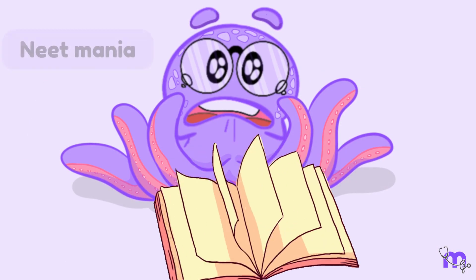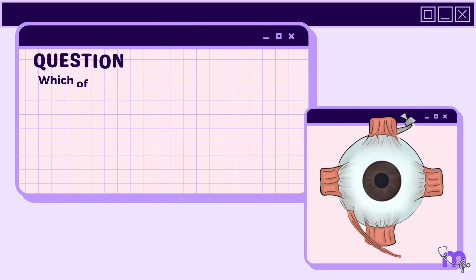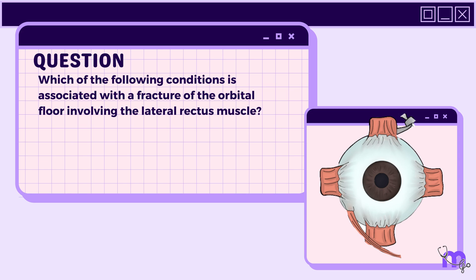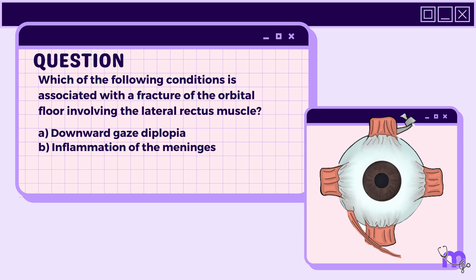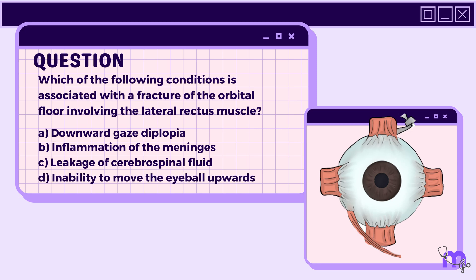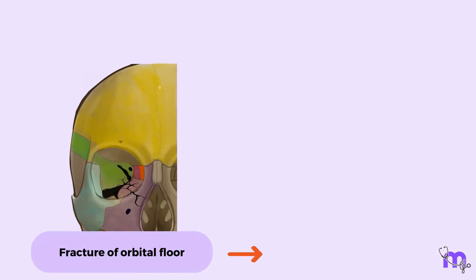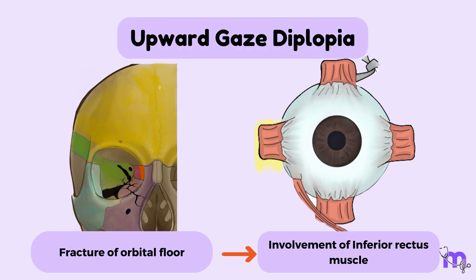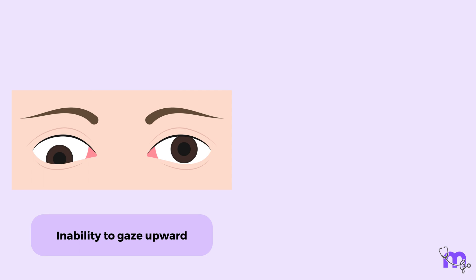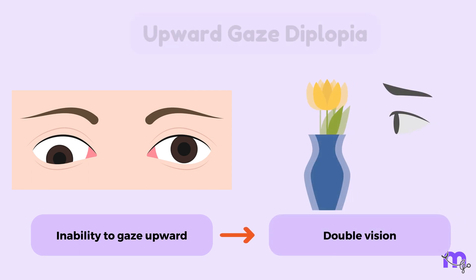Which of the following conditions is associated with the fracture of the orbital floor involving the inferior rectus muscle? A. Downward gaze diplopia. B. Inflammation of the meninges. C. Leakage of cerebrospinal fluid. D. Inability to move the eyeball upwards. Correct answer: D — Inability to move the eyeball upwards. A fracture of the orbital floor can result in the inferior rectus muscle being dragged into the fracture line, causing an inability to move the eyeball upwards and double vision. This condition is known as upward gaze diplopia.